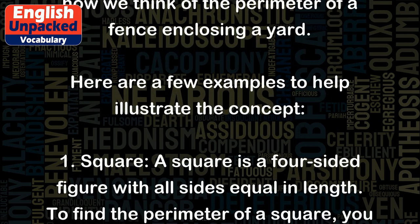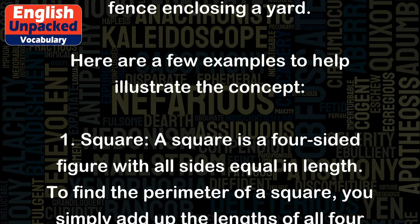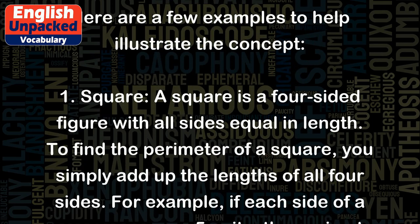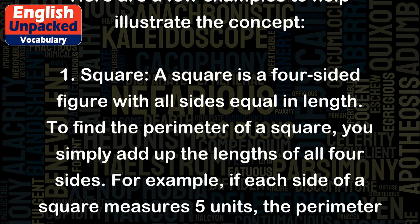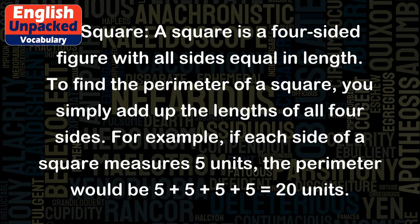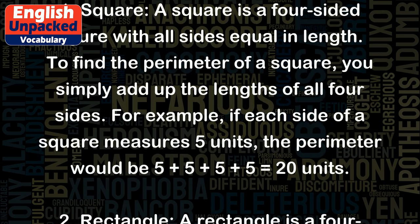To find the perimeter of a square, you simply add up the lengths of all four sides. For example, if each side of a square measures 5 units, the perimeter would be 5 plus 5 plus 5 plus 5 equals 20 units.